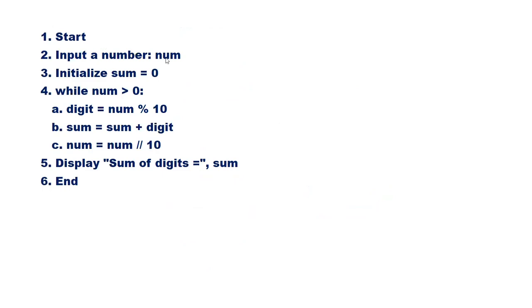Write an algorithm to find the sum of digits of a number. Start. Input number. Initialize sum equal to zero. While num is greater than zero: extract the last digit — digit equal to num mod 10, add digit to sum — sum equal to sum plus digit, then reduce the number — num equal to num divided by 10. This is a loop. Display sum of digits equal to sum.